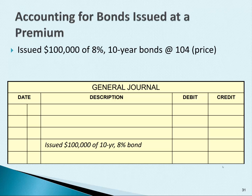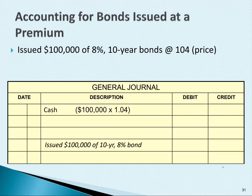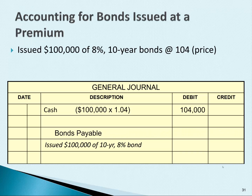To journalize the transaction, we have to debit cash since cash is increasing. The bonds have a maturity value of $100,000 and we multiply that by 104% or 1.04, which means cash increases by $104,000. Even though we received $104,000, we only have to pay the full maturity value of $100,000 when the bonds mature. So we have to increase a liability account called bonds payable by $100,000.